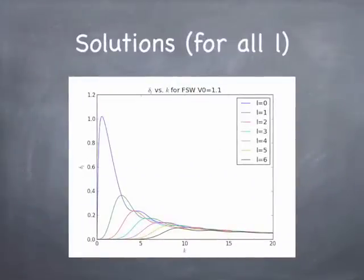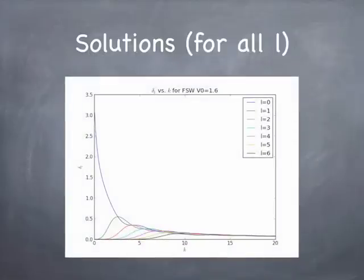I worked this out for the square well for a couple of different potentials. For a fairly weak potential, the strongest cross-section is L equals 0. If I bump up the size of the potential a little bit, an interesting thing happens: the L equals 0 phase shift starts out at pi instead of 0. That turns out to be significant — when the phase shift starts out at pi as the energy goes to 0, it means you already had a bound state. The potential well is deep enough and wide enough to have exactly one bound state for L equals 0.